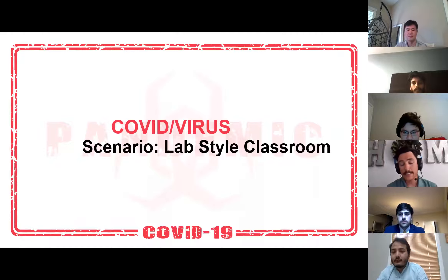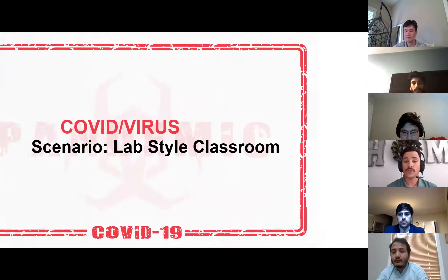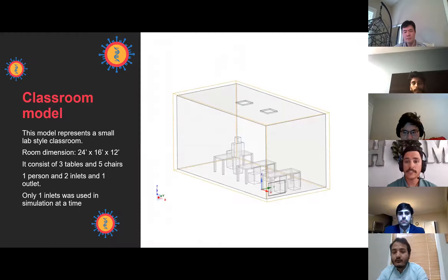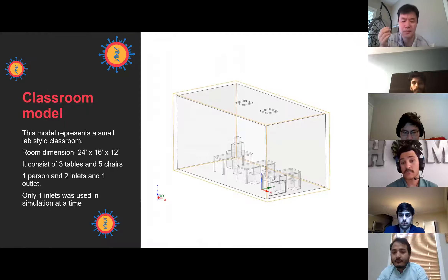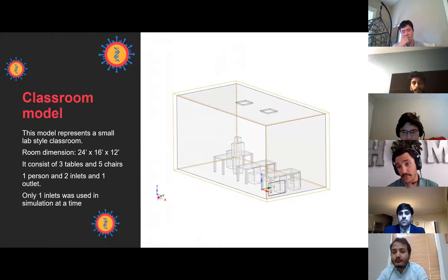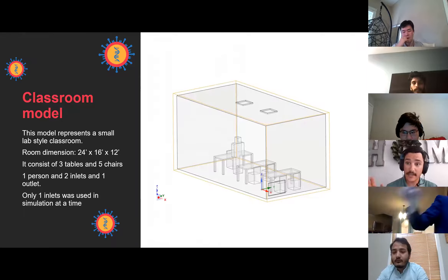For the COVID virus scenario in a lab-style classroom setting, the model represents a classroom-like environment. The dimensions of the room were 24 by 16 by 12 feet. As you can see, there are three tables, five chairs, and a person standing in front of the teacher's table. There are two vents on top and a vent on the back. We changed which vent was being used, using only one inlet at a time and one outlet, and moving those configurations around was our main focus.